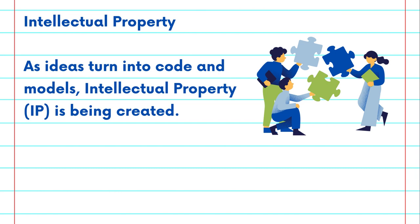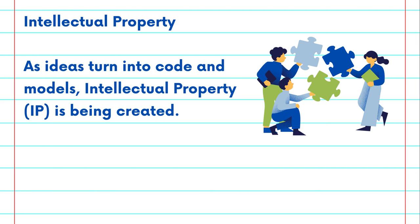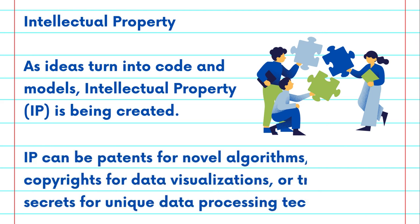As they turn those ideas into code and models, they're creating intellectual property, or IP for short. IP can be patents for novel algorithms, copyrights for data visualizations, or trade secrets for unique data processing techniques.